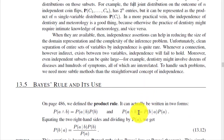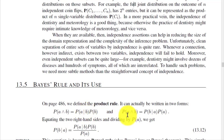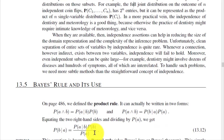The next point is Bayes' rule and its use. We define the product rule: P(A ∧ B) = P(A|B) × P(B) = P(B|A) × P(A). This equation is known as Bayes' rule.